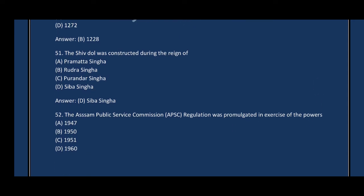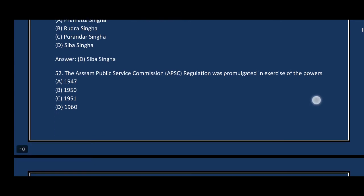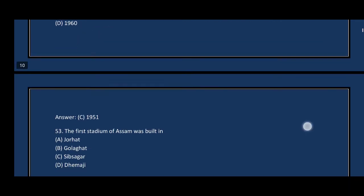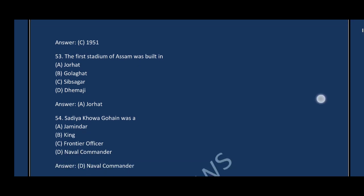Question number fifty-two: The Assam Public Service Commission regulation was promulgated — the correct answer is option C, 1951. Question number fifty-three: The first stadium of Assam was built in — the correct answer is option D, Jorhat.